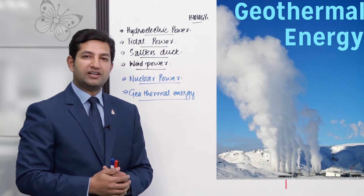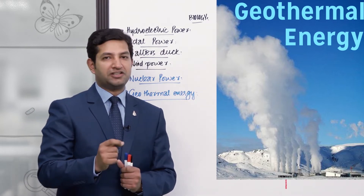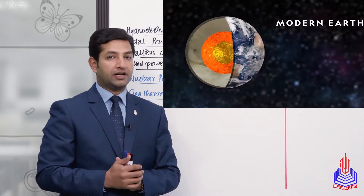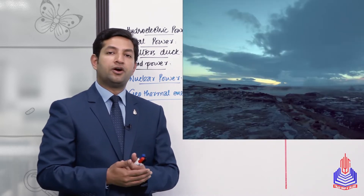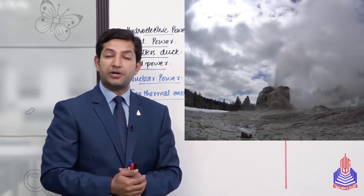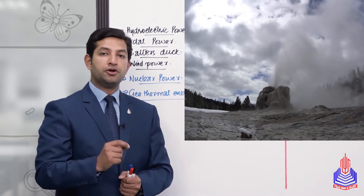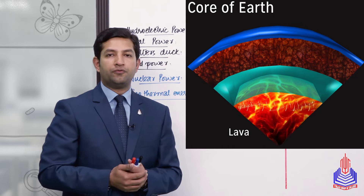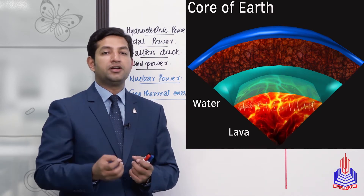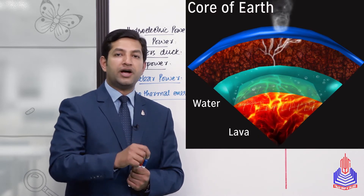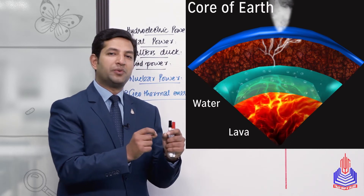If you think about the word 'geothermal energy,' you realize it means heat energy present inside the Earth. You should know that Earth is a piece separated from the Sun whose core is still very hot. When we see volcanoes or hot springs — warm water springs — or hear about underground geysers, it is clear that the heat in the Earth's core is expressing itself in some form. Technically, the hot lava at the Earth's core releases heat that moves upward, where layers of water are present. That water, when heated sufficiently, begins to rise as steam to the surface.